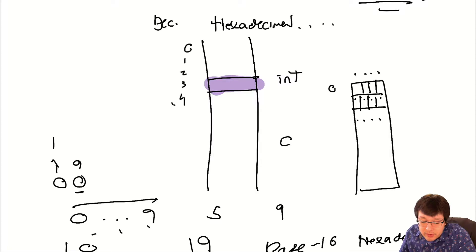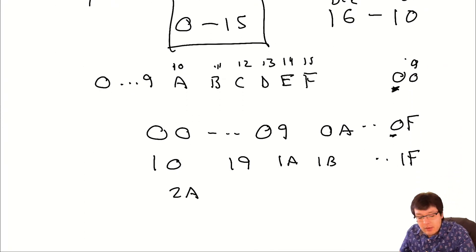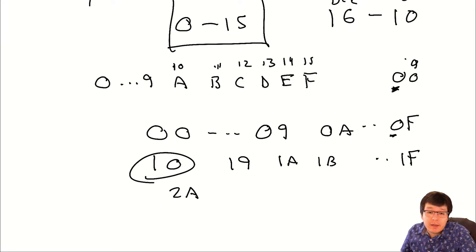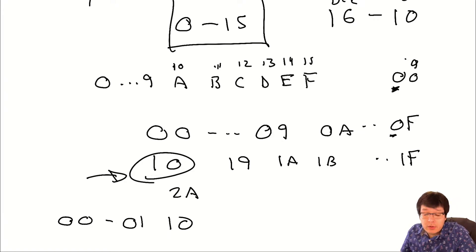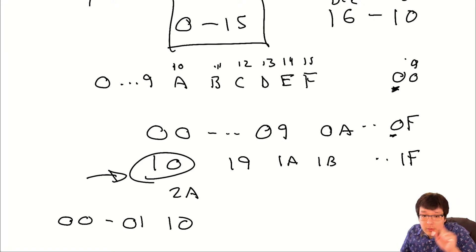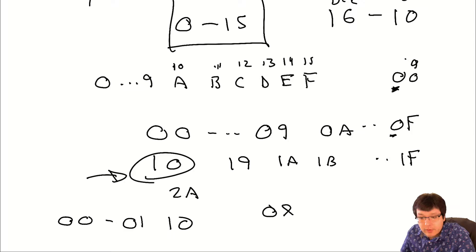The '0x' prefix tells you whether a number is hexadecimal, because '10' could be 2 in binary, 10 in decimal, or 16 in hexadecimal depending on the base. So the computer adds '0x' in front when printing to make it clear. If you see '0x10', that's not decimal 10 or binary 2 — it's hexadecimal 16. The system always adds that prefix so you can distinguish between bases.